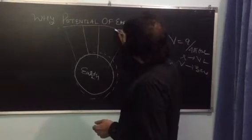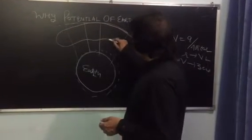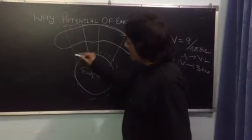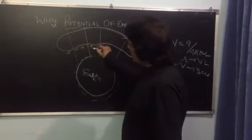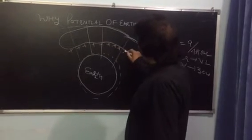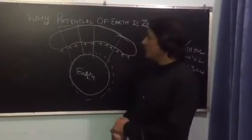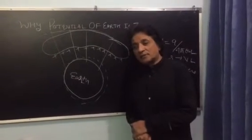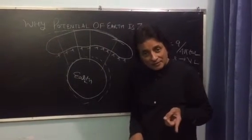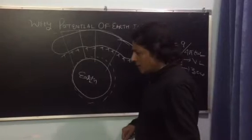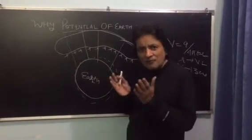So, when cloud appears near the surface of the earth, due to induction through air as a dielectric, cloud acquires positive charge. Earth acquires negative charge. As a result of this, what happens? Electric field is set up.